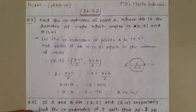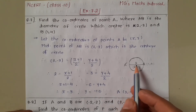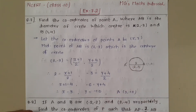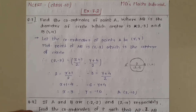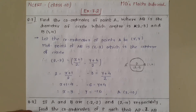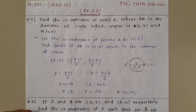This is easy. You have to know, students, that for diameter AB, the midpoint is the center. So the midpoint given is the center, and you have the B coordinate. You have to find the A coordinate. Let the coordinate of point A be (x, y). The midpoint of AB is (2, -3), which is the center of the circle.